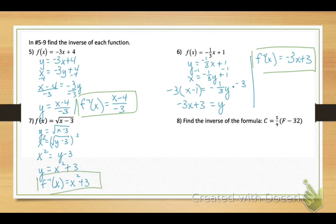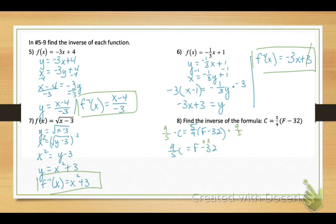Number 8: find the inverse of a formula. When doing that, do not interchange variables. Just copy down the formula and solve for the second variable, F. Divide by 5/9, which is the same as multiplying each side by 9/5. We get 9/5 times C equals F minus 32. Add 32 to both sides: Fahrenheit equals 9/5 times Celsius plus 32. When finding the inverse of a formula, do not interchange variables — just solve for the other variable.